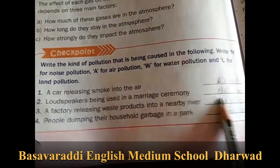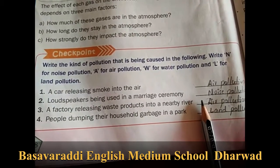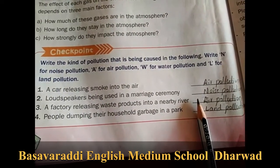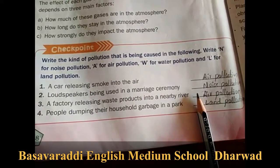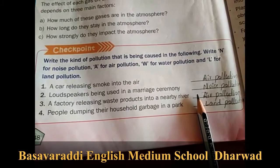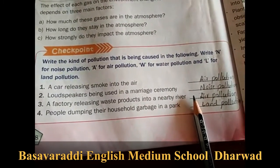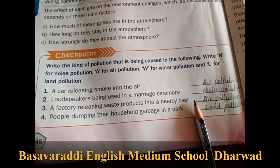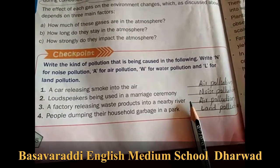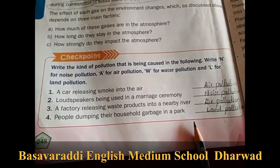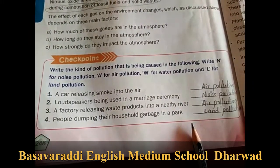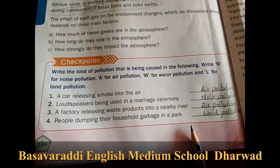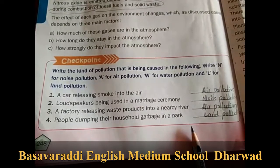Next checkpoint: write the kind of pollution being caused. Write N for noise pollution, A for air pollution, W for water pollution, and L for land pollution. First: a car releasing smoke into the air — answer is A, air pollution. Second: loudspeakers being used in a marriage ceremony — answer is N, noise pollution. Third: a factory releasing waste products into a nearby river — answer is W, water pollution. Fourth: people dumping household garbage in a park — answer is L, land pollution.